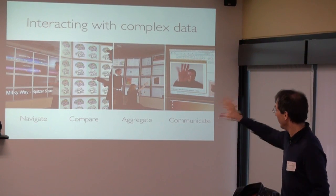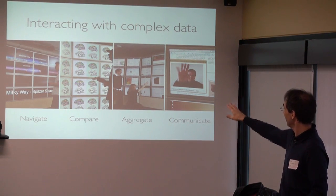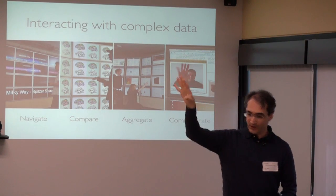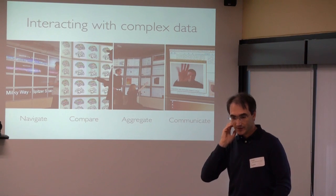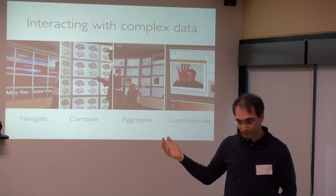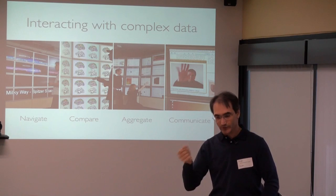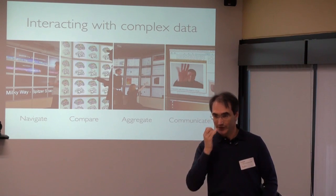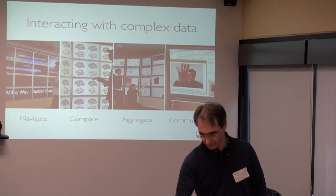Oftentimes what scientists want is to compare homogeneous data like brain scans, or to aggregate heterogeneous data — a brain scan, a DNA sequence, data from a gene bank, papers from Google Scholar — and discuss it in small groups. And they all want to know how to bring in a colleague who's working at Stanford or Cambridge. Remote collaboration is something we're not covering yet, although we have a project in that area.